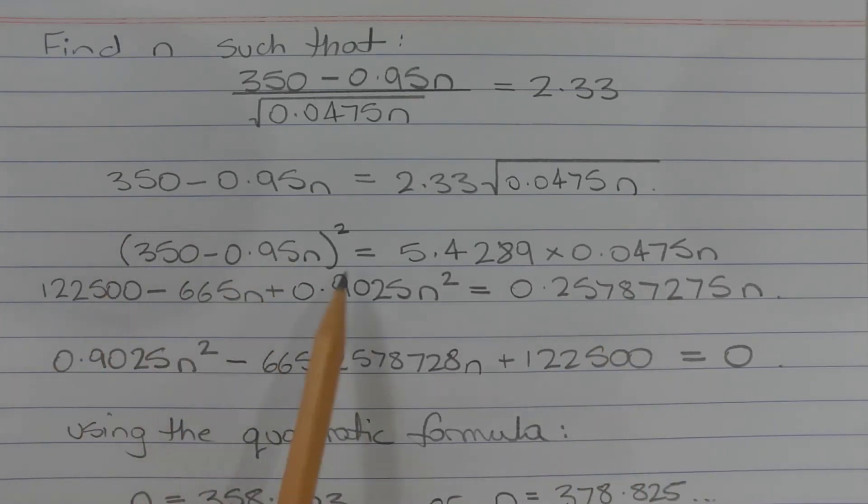Expanding the brackets on the left-hand side and multiplying these two values together, we get 122,500 minus 665N plus 0.9025N squared is equal to 0.25787275N.